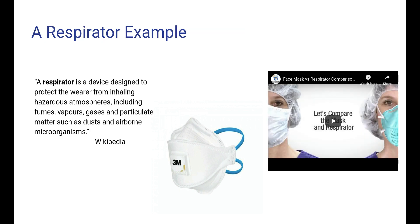Let us try to apply this template using an example of a respirator. A respirator is a device that protects someone from inhaling dangerous stuff like dusts or airborne microorganisms. Please have a look at this definition from Wikipedia and then watch the short video. Then try to apply the template from the previous slide for the respirator, outlining the description using practice, problem, requirements, artifact, quality, and effects. Then you can have a look at the solution in the next slide.